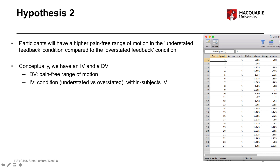Conceptually we have two variables: an independent variable and a dependent variable. The dependent variable is the measure of pain-free range of motion, which is what the actual scores are in the cells in our data set. Our independent variable is our condition variable — our grouping variable — which has two levels: understated versus overstated. That's a within-subjects independent variable because all 24 participants participated in both conditions, so all 24 participants have a score on our dependent variable for both groups.